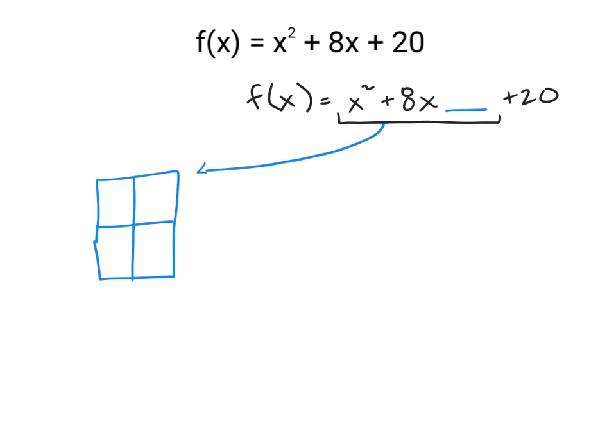Let's begin by filling in this area model with what we already have, which is the x² and the 8x. There's the x², and we're going to divide the 8x perfectly in half to get 4x and 4x.